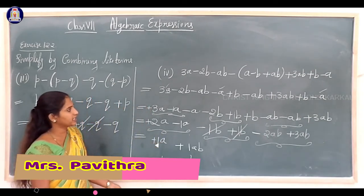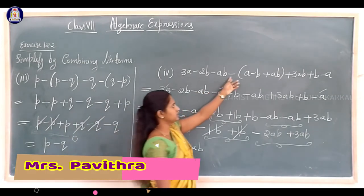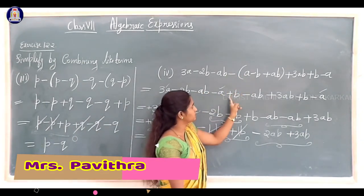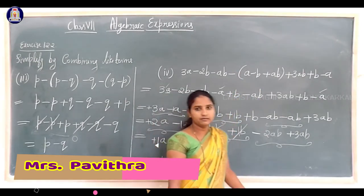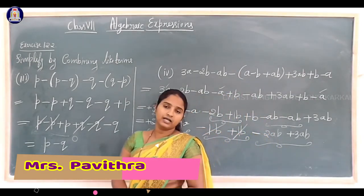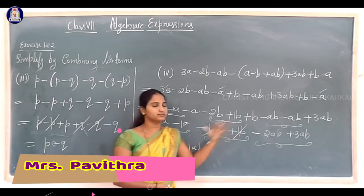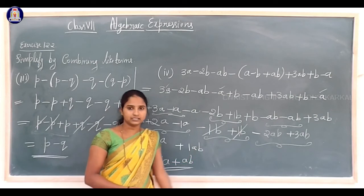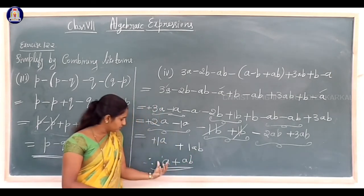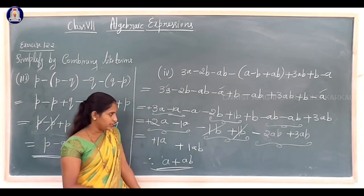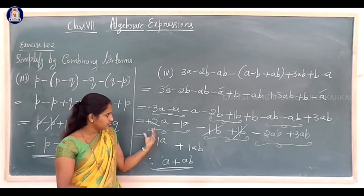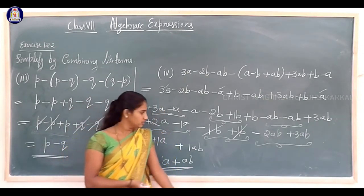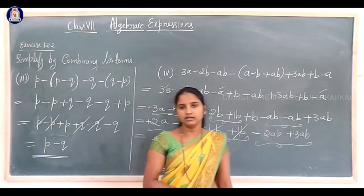To summarize: first remove the brackets by multiplying the outside sign into each term inside — plus into minus is minus, minus into minus is plus, minus into plus is minus. Then combine like terms together. Finally simplify the like terms by checking the signs: same sign means addition, different sign means subtraction, and the answer takes the sign of the greater number.